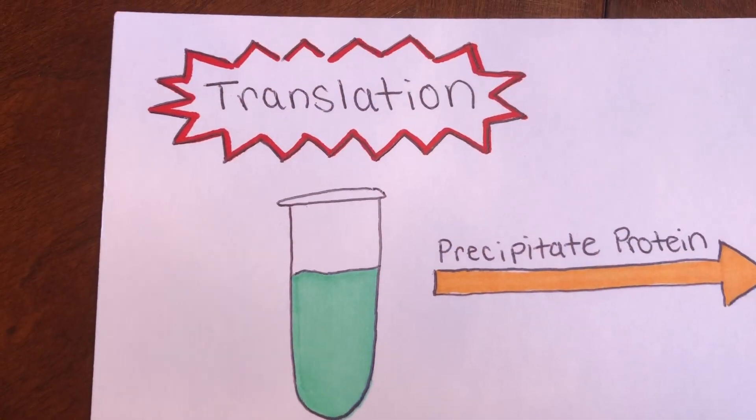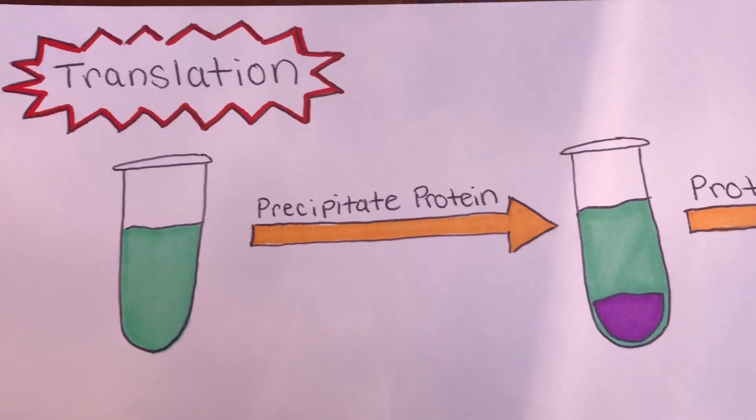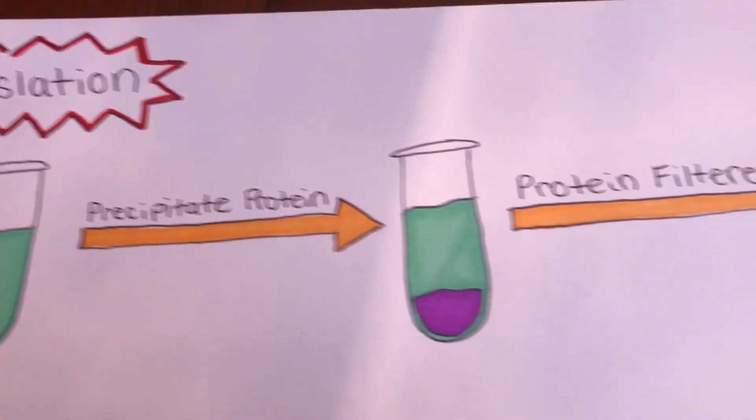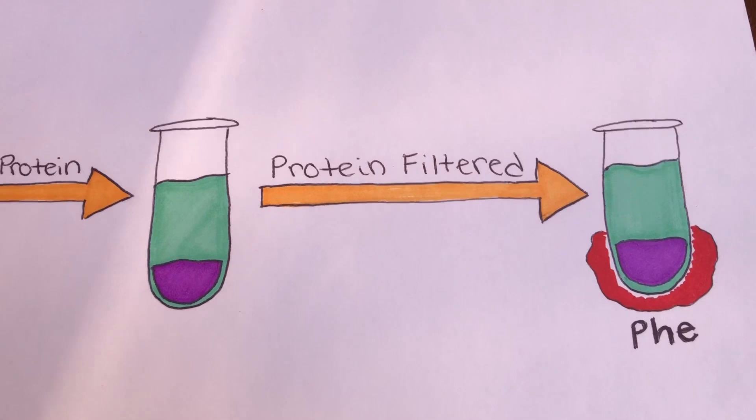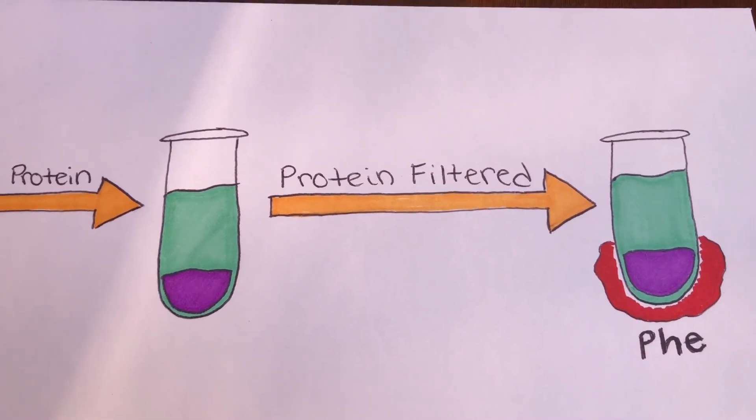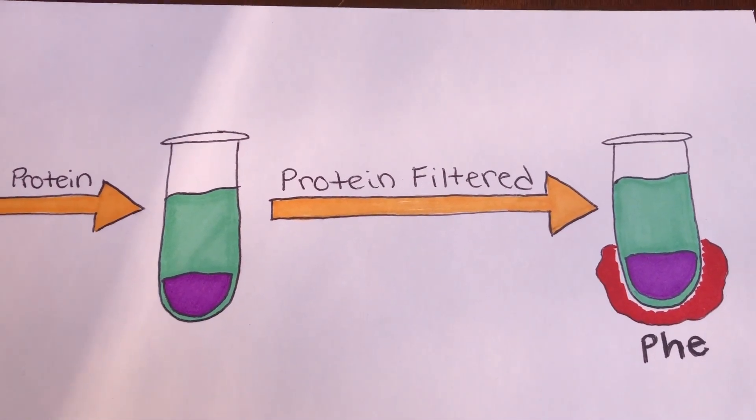Translation took place in each test tube, and the protein was precipitated. The proteins were then filtered and checked for radioactivity. If the protein was radioactive, then the labeled amino acid must be in the protein, and the codon codes for that amino acid.